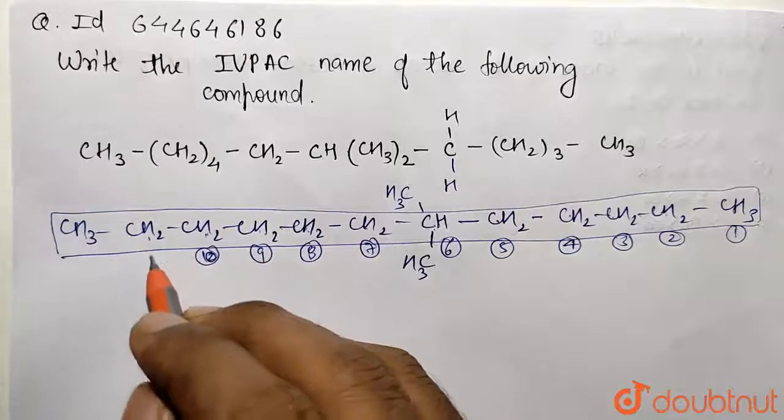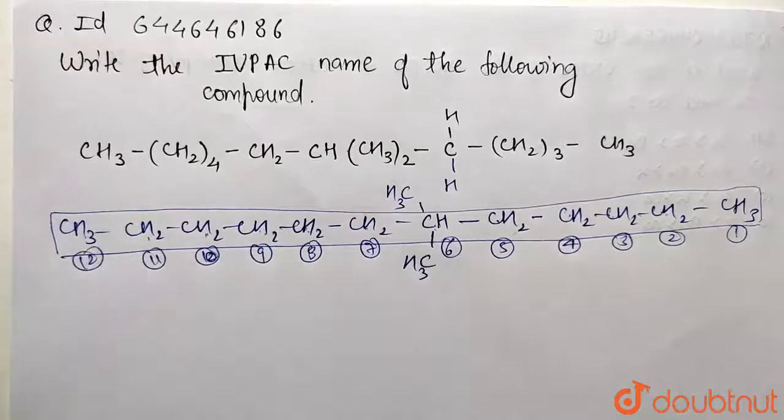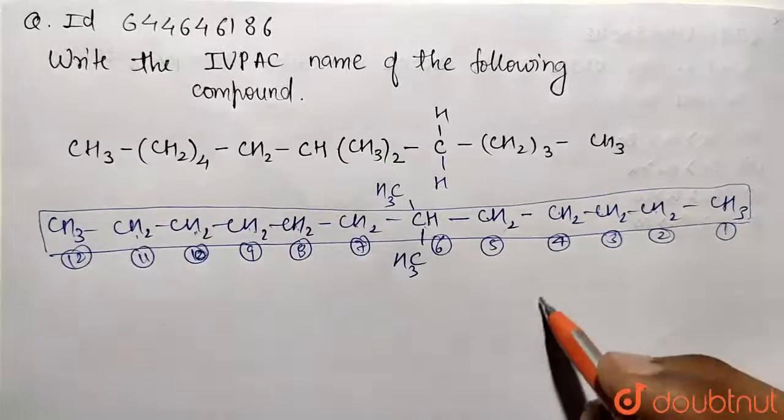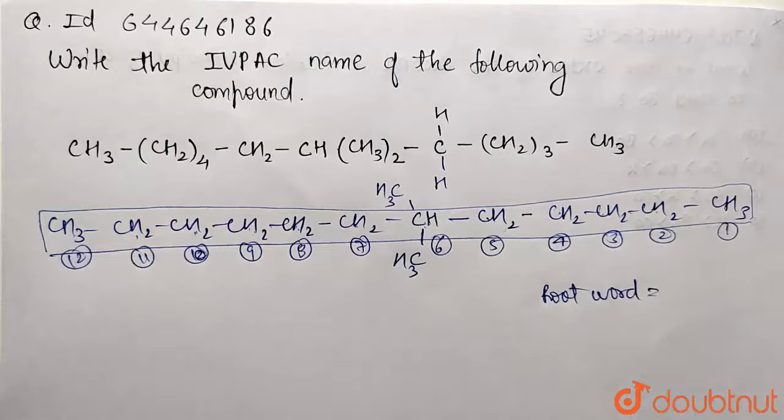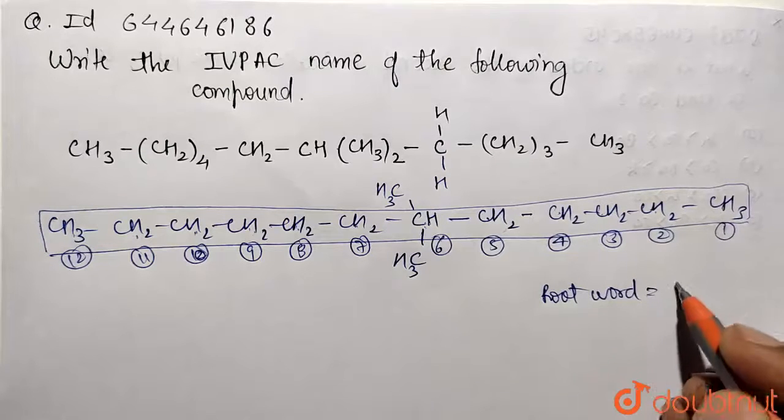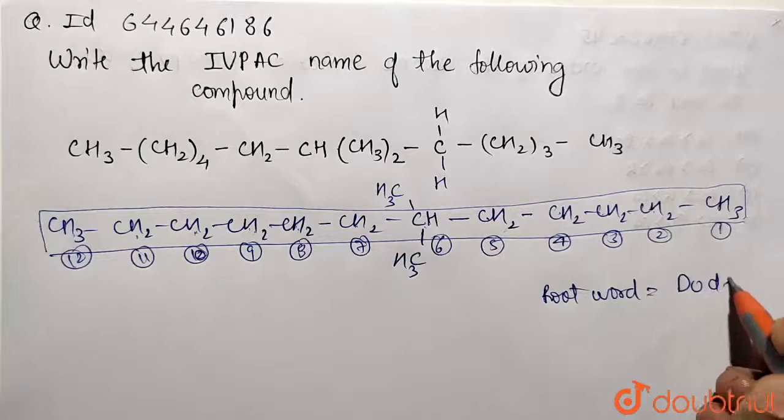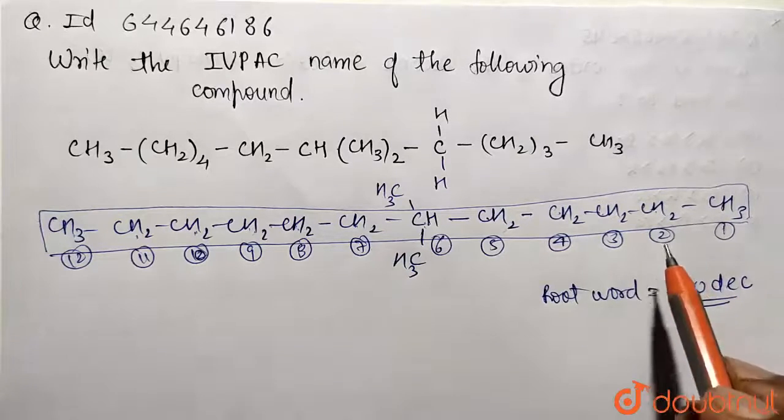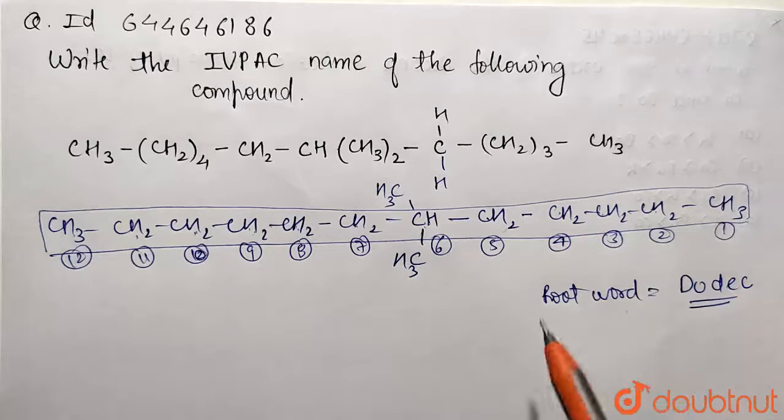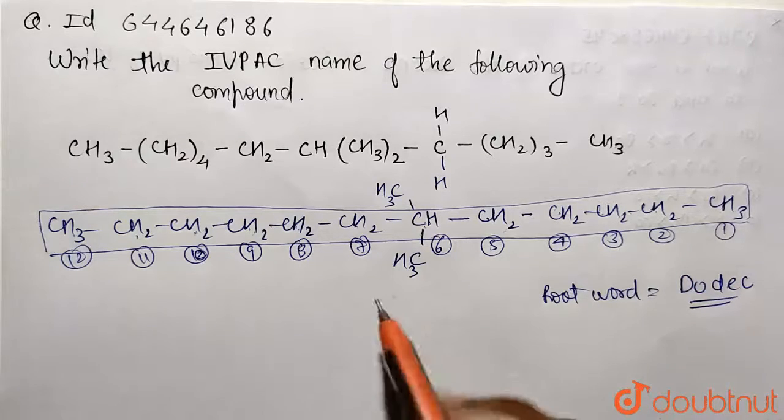The root word for 12 carbons is dodec (D-O-D-E-C). For reference, 11 is undec and 10 is dec. These are nomenclature terms you should know.